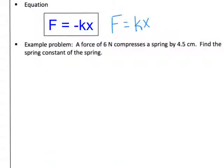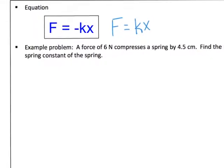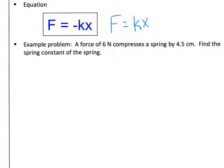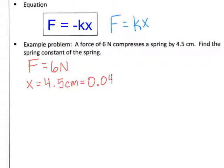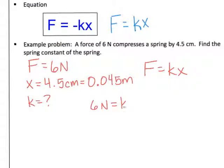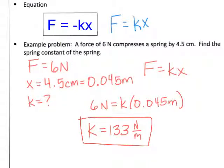Let's try an example problem. A force of 6 newtons compresses a spring by 4.5 centimeters — find the spring constant. We have F = 6 N, and x = 4.5 cm, which we convert to 0.045 meters. We're ignoring the negative sign since we only want the magnitude. Plugging in: 6 = k × 0.045, so divide to solve for k. You should get approximately 133 newtons per meter.